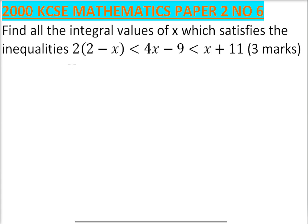You open the bracket. This will give you 4 minus 2x, which is less than 4x minus 9. So bring 9 to this side, it becomes positive. So 4 plus 9 is 13.